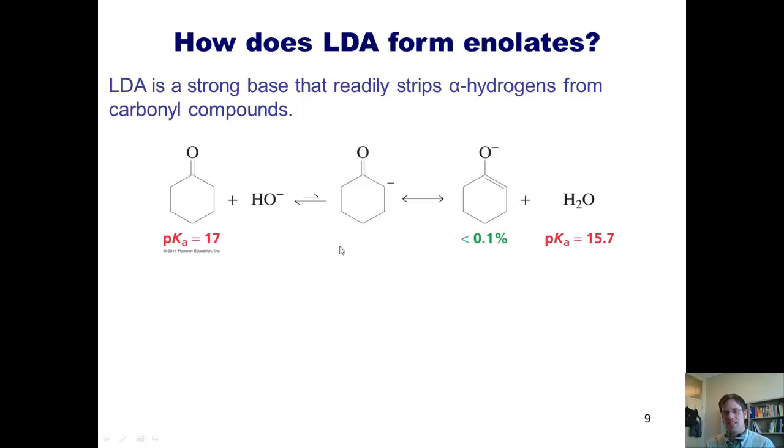Well, it means that the protons in water are actually more acidic than the alpha proton on cyclohexanone. So even if I were able to transiently form a small amount of this enolate, it would tear a proton off of water and revert back to the starting materials much more prevalently than the starting materials would be deprotonated. All because this product, water, is much more acidic than the alpha proton in the starting material.